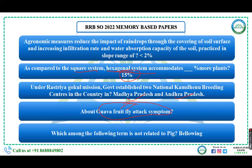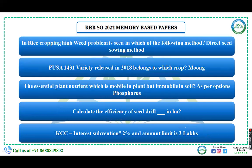Which of the following terms is not related to the pig? Various options were given, but 'bellowing' was not related to the pig — that was the answer. In rice cropping, high weed problem is seen in which method? It is seen in the direct seeding method. HW-1431 variety released in 2018 belongs to which crop? It belongs to moong.